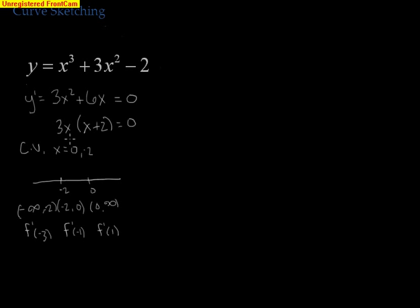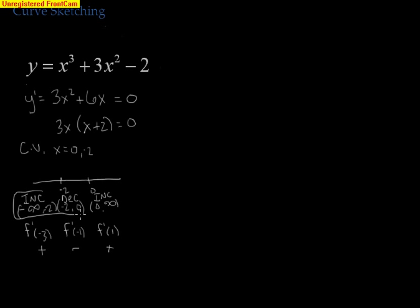We care about the sign of each test value, not the exact number. Plugging in negative 3 gives a negative times a negative, which is positive — so the function is increasing on negative infinity to negative 2. Plugging in negative 1 gives a negative times a positive, which is negative — decreasing on negative 2 to 0. Plugging in 1 gives positive times positive — increasing again on 0 to infinity.